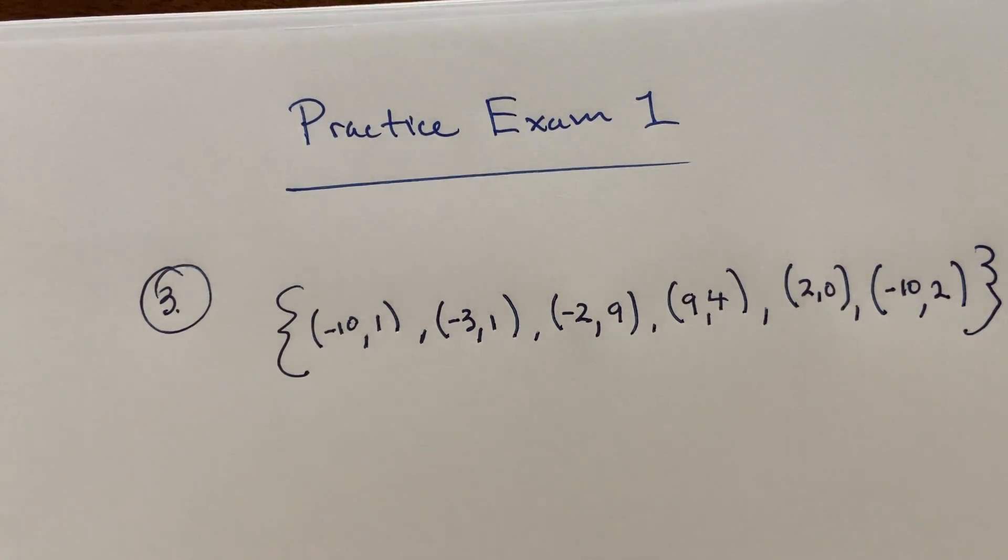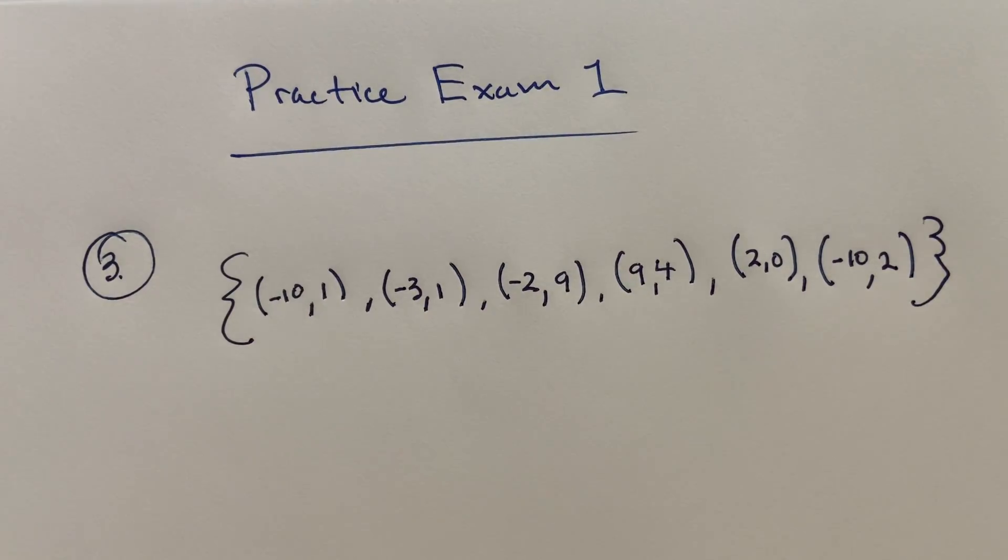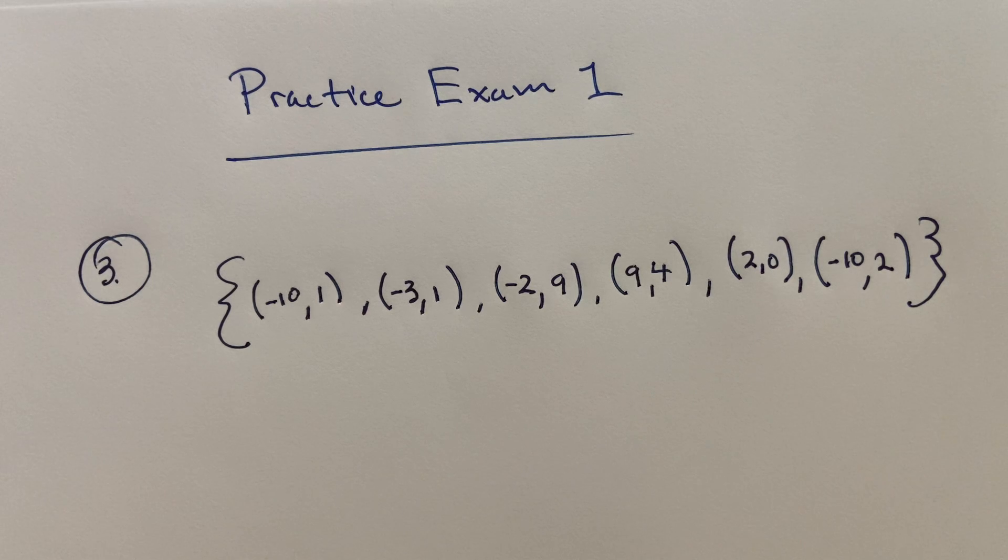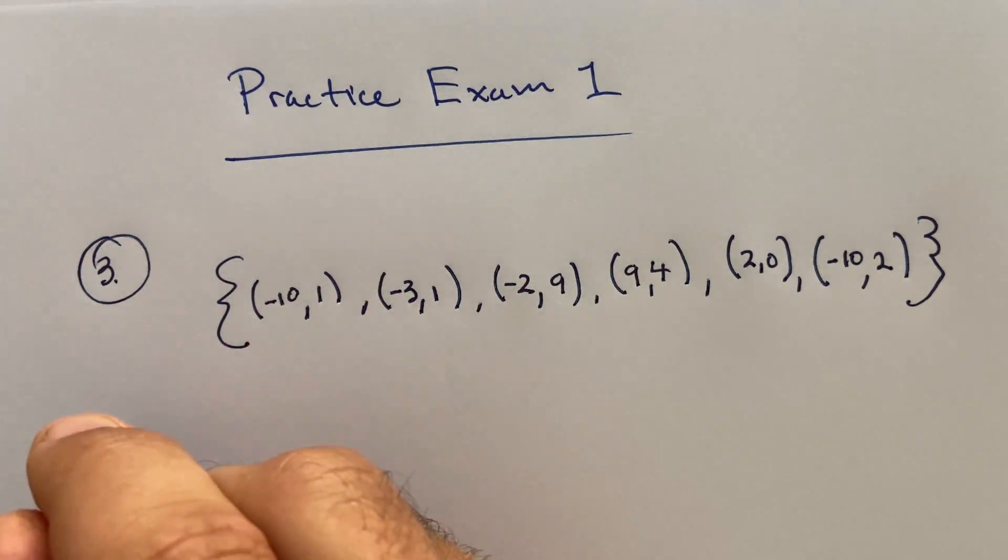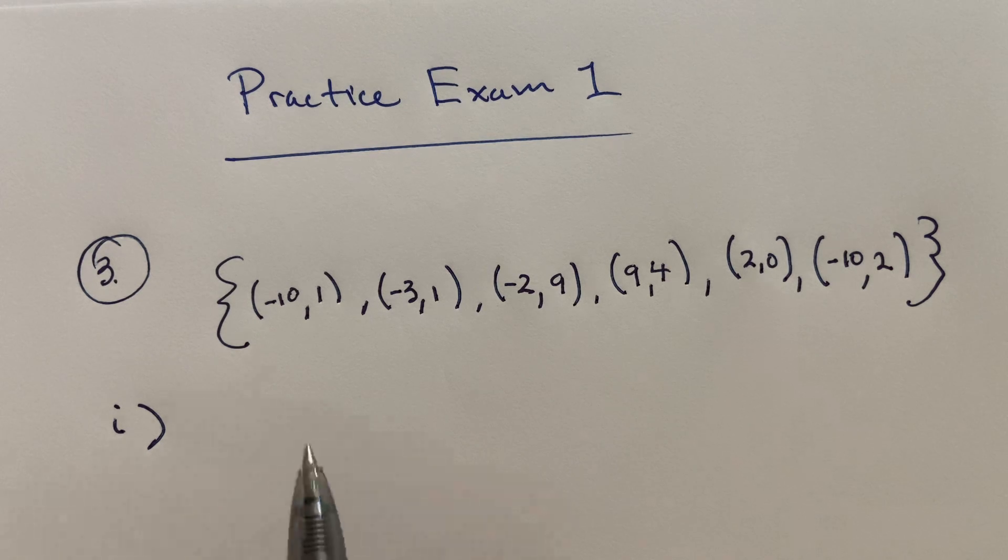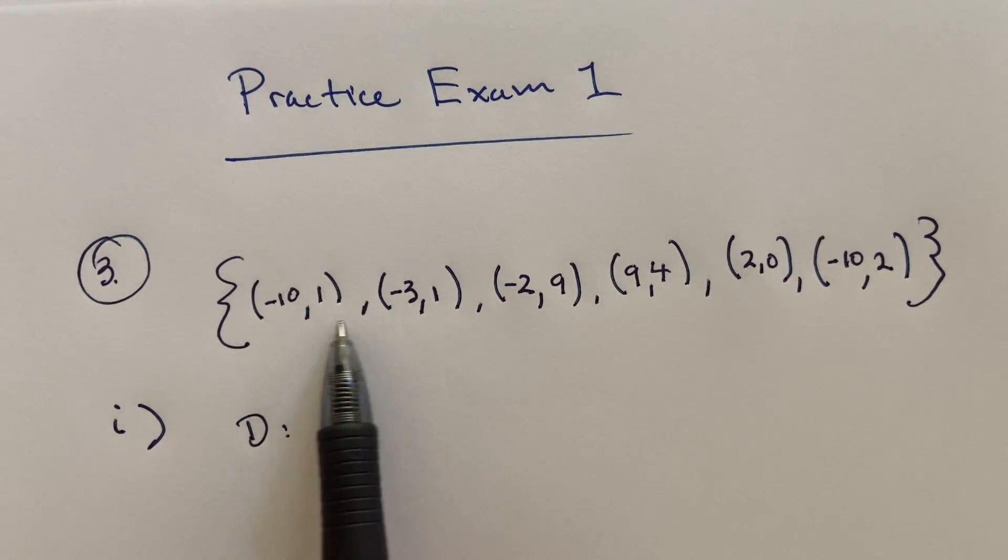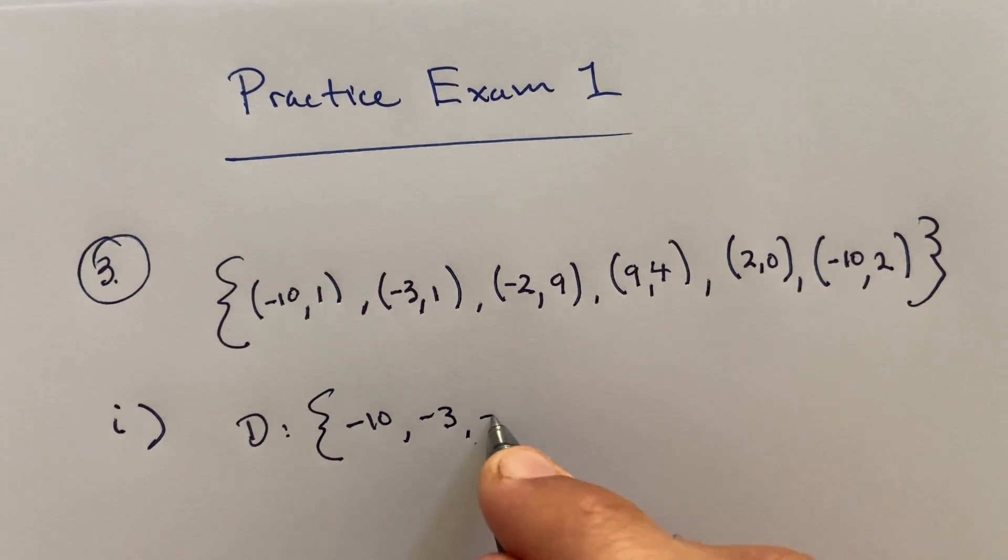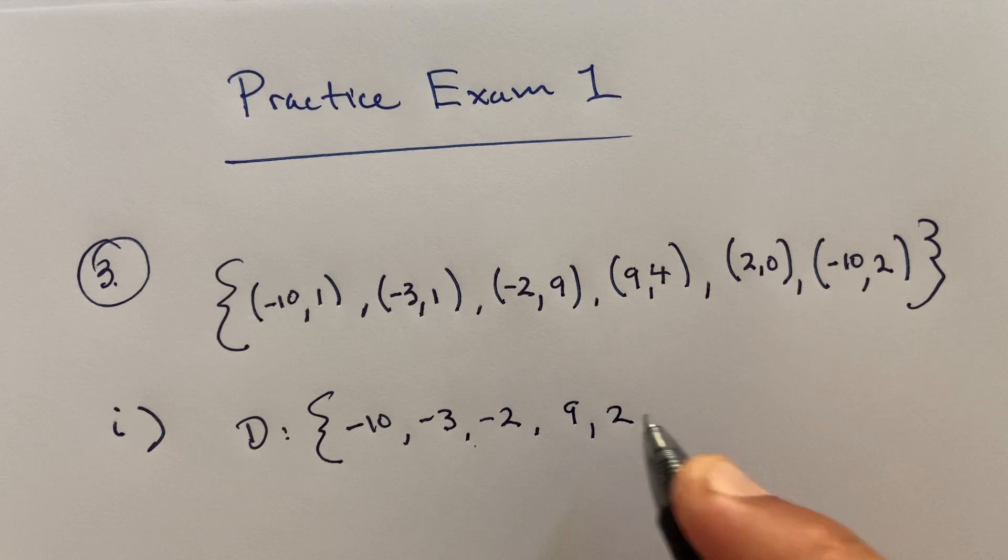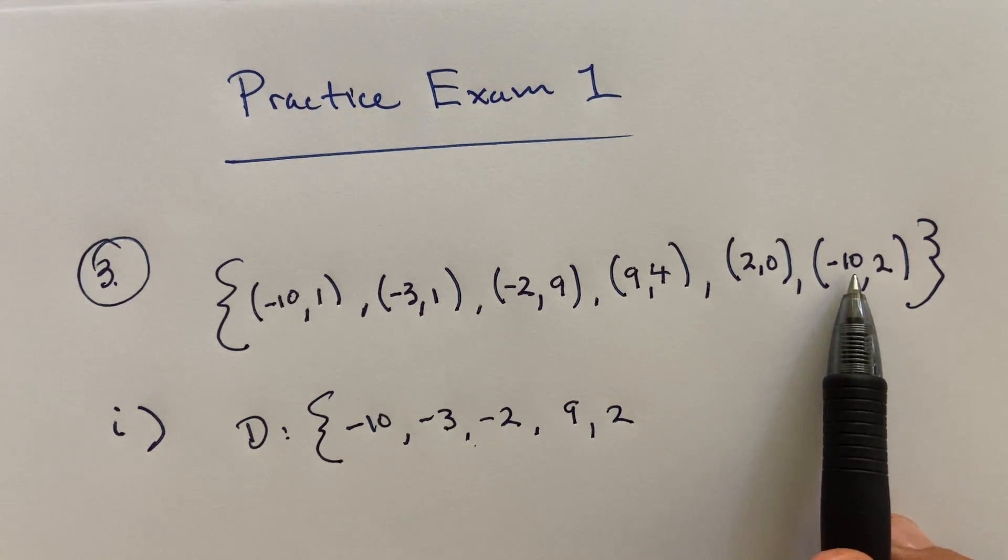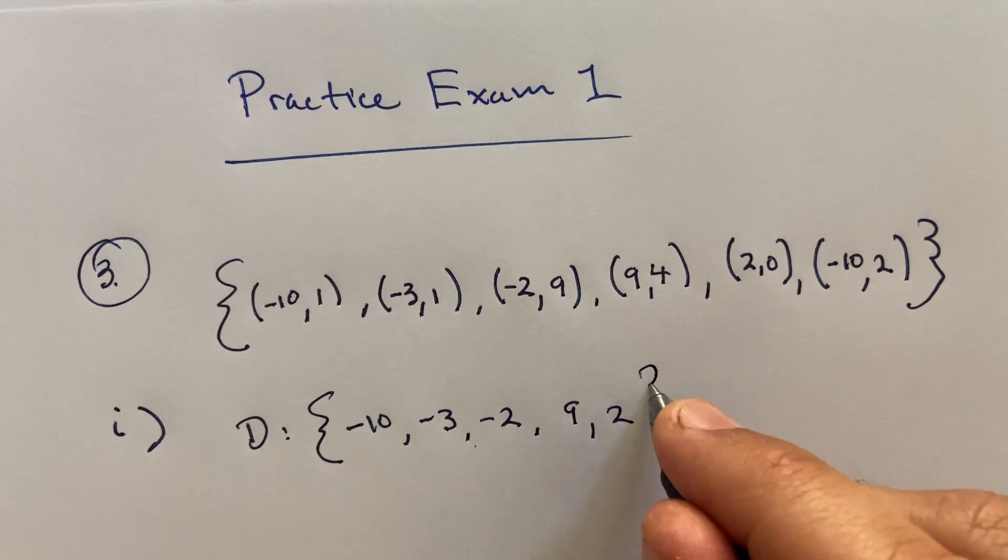If you remember, certain relations are functions based on whether each input corresponds to exactly one output or not. So let's first just write the domain down. For this domain, I'm going to write this in set notation. The domain is the set of all the first components, so we'll have negative ten in there, negative three, negative two, nine, two, and negative ten is written again but negative ten is already accounted for. So this would be the domain.